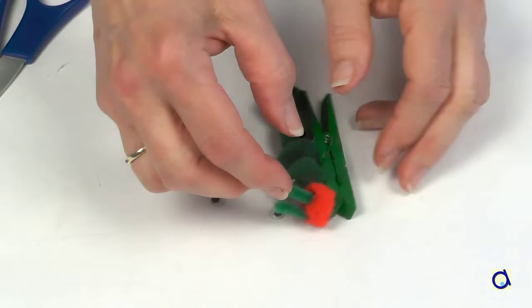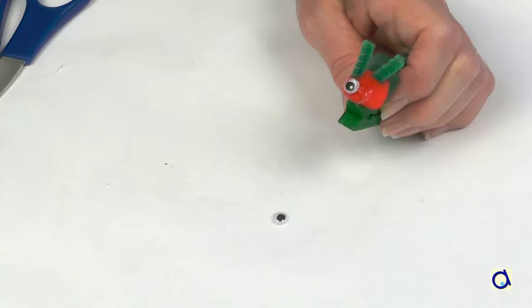And to finish, put two other dots of hot glue to attach the eyes. And now your magnetic caterpillar is ready!